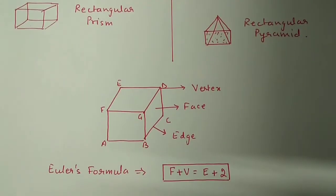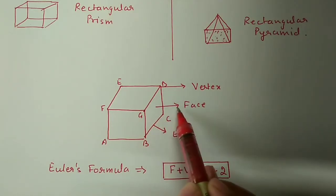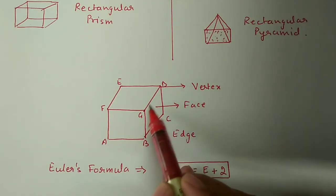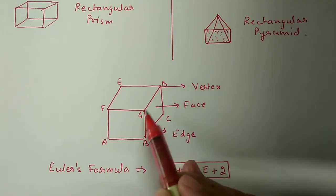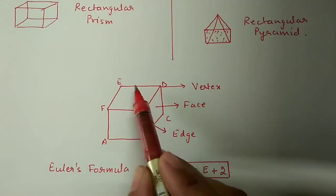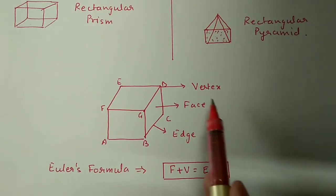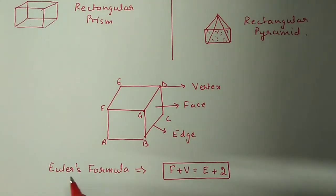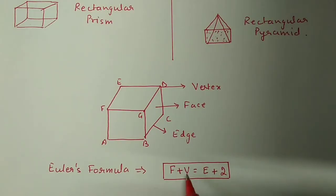Now, all these plane surfaces we will call faces. Where two faces meet, we will call that an edge. Where edges meet at corners, we will call that a vertex. We have a formula relating these three called Euler's formula, which is F plus V equals E plus 2, meaning faces plus vertices equals edges plus 2. This formula we will use in this exercise.